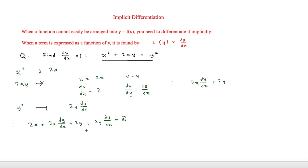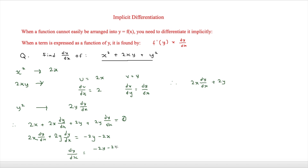We can now collect like terms. That means 2x dy/dx plus 2y dy/dx is equal to minus 2y minus 2x. We can factor out dy/dx, giving dy/dx equals (minus 2y minus 2x) over (2x plus 2y).